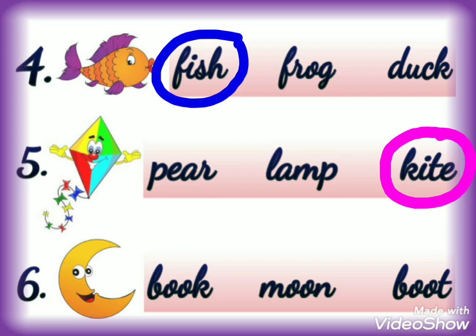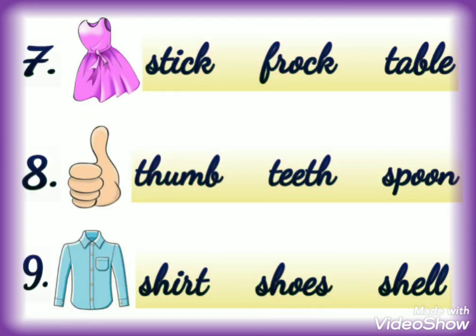Number 6 — this is the picture of moon. We will read the options. First option is B-O-O-K, book — this is not the right answer. Next option is M-O-O-N, moon — yes, here we have got our right answer, so we will circle this word. The next option is B-O-O-T, boot — this is also not the correct answer. So we will move on to the next number, that is number 7.